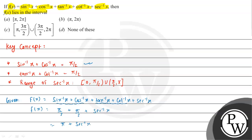So this is π/2 plus π/2, that is π, plus sec inverse x. So f(x) = π + sec inverse x. Now we will find this range. The range of sec inverse x is from 0 to π/2, union π/2 to π.